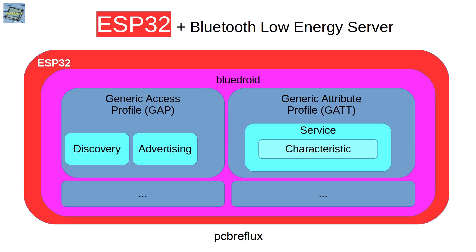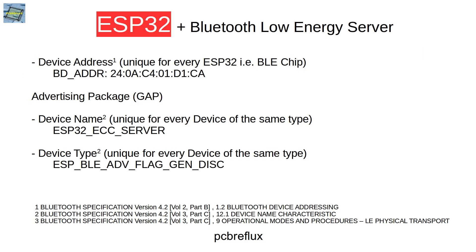The Generic Access Profile helps us with discovering and advertising our service. The Generic Attribute Profile helps us describe our service and all the characteristics we use inside it. We also need to know that every device has a unique Bluetooth address — the ESP32 is unique for every chip on the market, and vendors purchase a stock of Bluetooth addresses from the Bluetooth Special Interest Group.